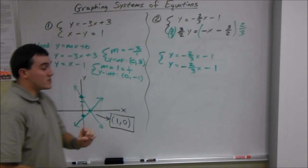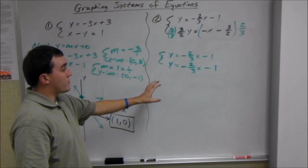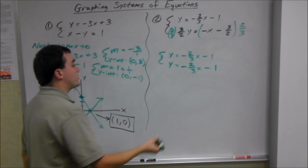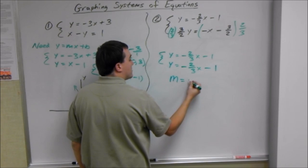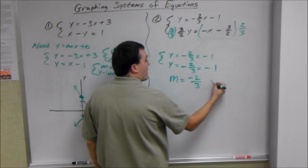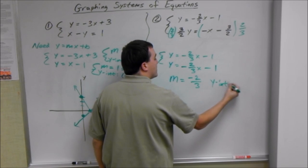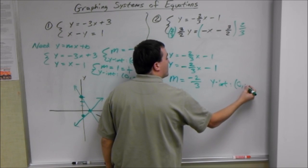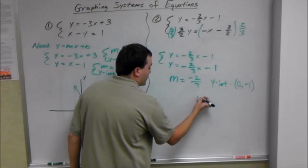So we already know our answer from the definition, but we'll still graph it anyways. Our slope for both of these is negative 2 over 3. That's our rise over run. And our y-intercept is 0 comma negative 1. Now we can graph it.